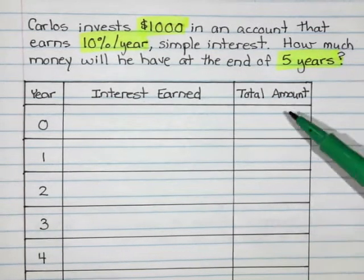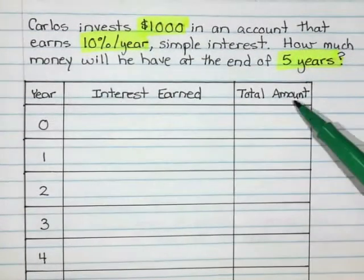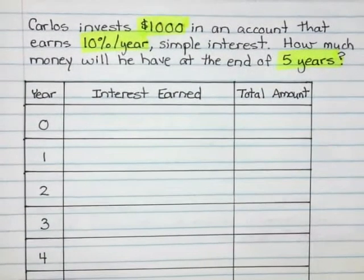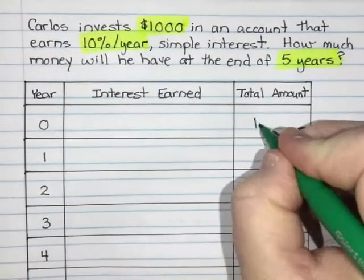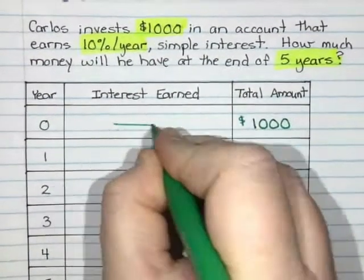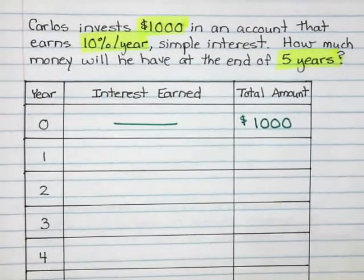So I made a little table. It says year, interest earned, and total amount. Year zero is just when he goes to the bank and opens that account, he puts in $1,000. He didn't earn any interest. He's just opening the account. He's starting with $1,000.